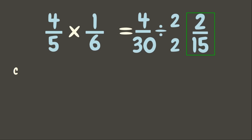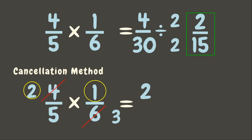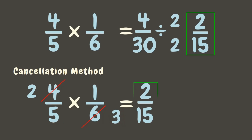Now let us try the cancellation method. Can you find a numerator and denominator which have a common factor? Very good! 4 and 6 have a common factor of 2. Now let us divide them by 2: 6 divided by 2 is 3, and 4 divided by 2 is 2. Now let us multiply them: 2 times 1 is 2, and 5 times 3 is 15. We got the same answer.